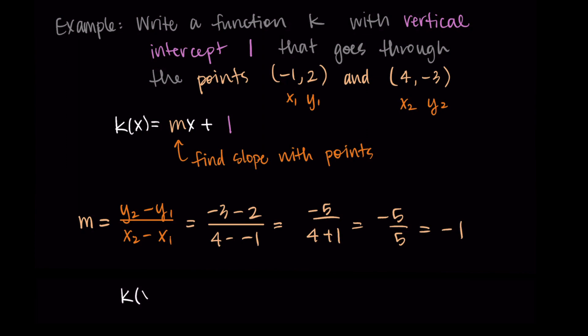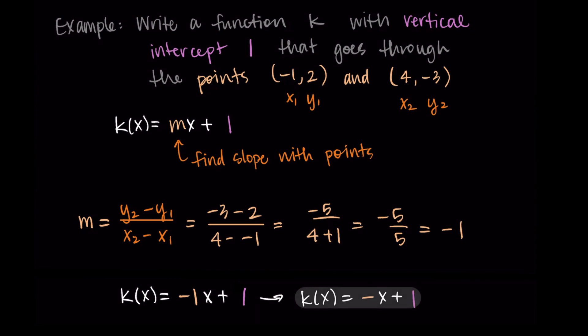Now I substitute m = -1 into the formula, giving k(x) = -1·x + 1. Typically when we have -1 multiplied by a variable, we simplify, so our final answer is k(x) = -x + 1.